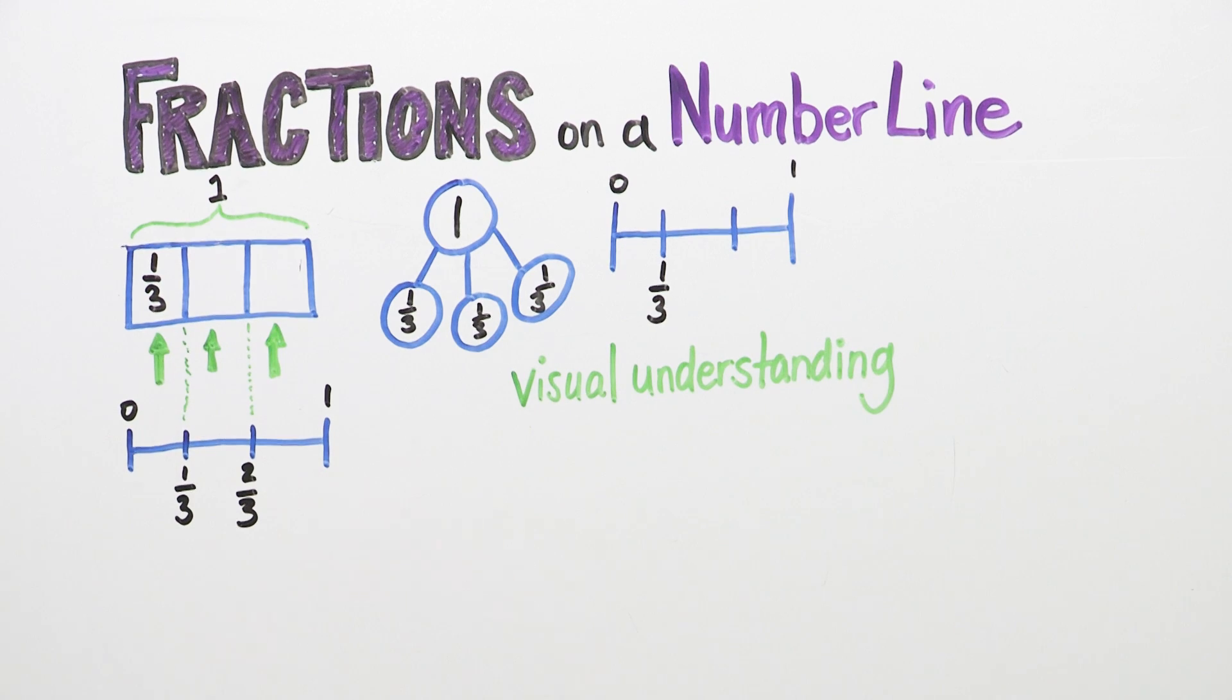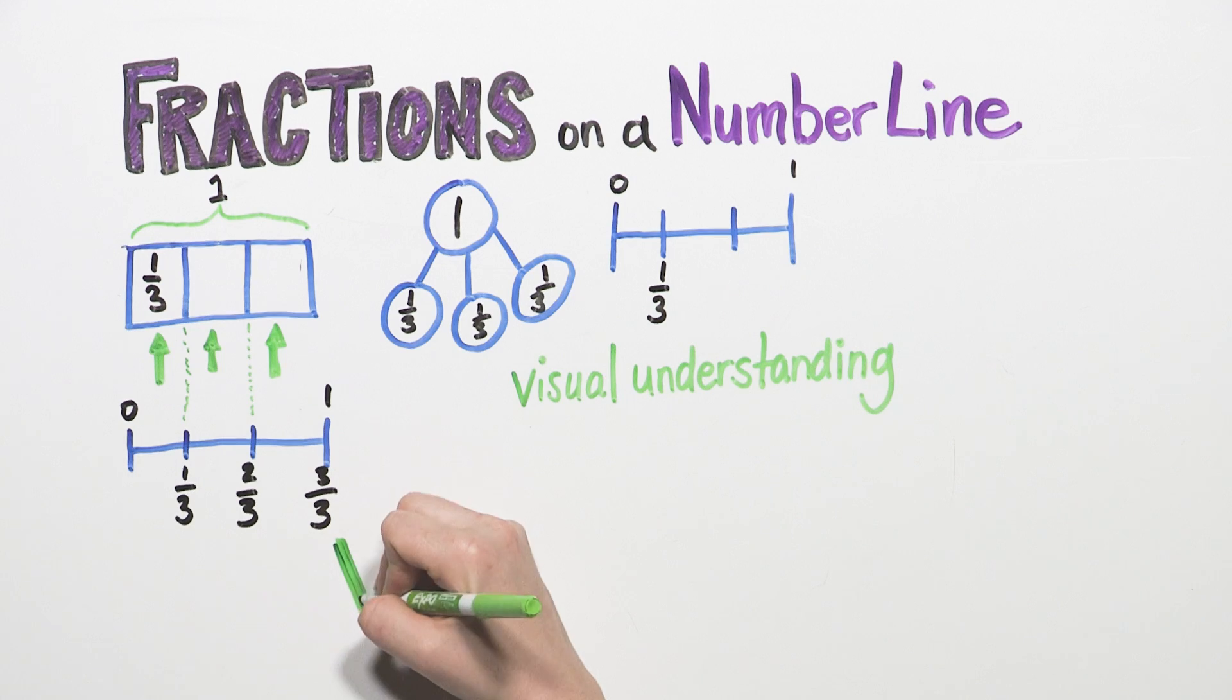One-third, two-thirds, three-thirds. Talk with your child about how she can see that three-thirds equal one whole.